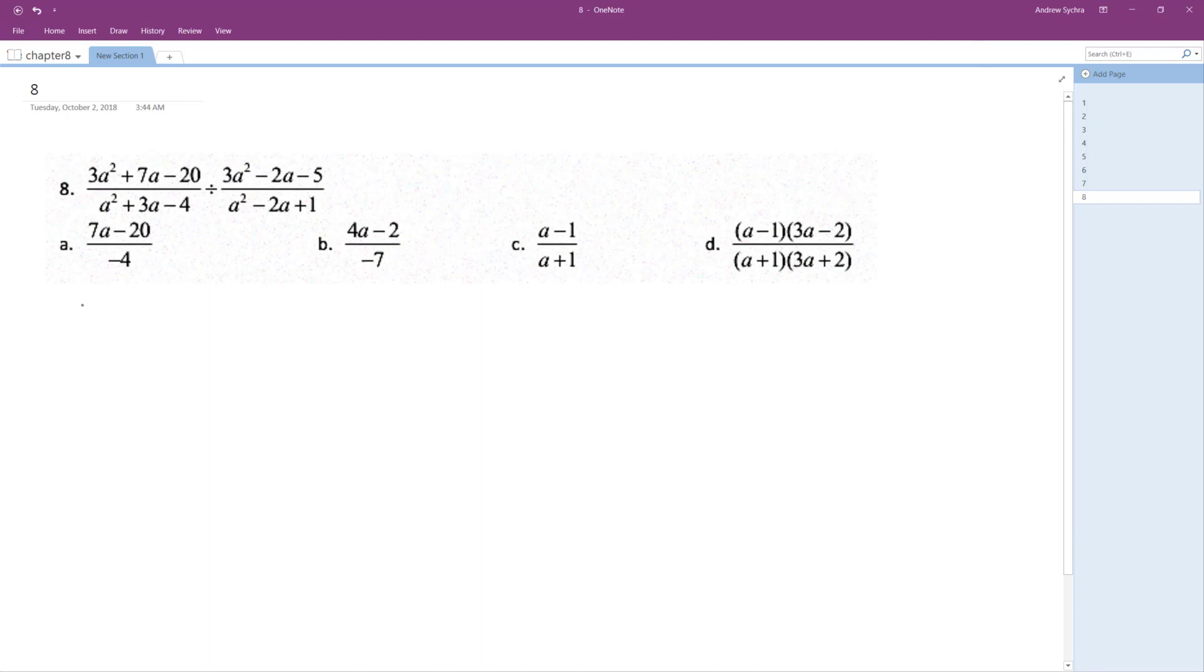Starting off here on the left, I'm going to factor this out first so we can get simpler terms. So 3a minus 5 and then a plus 4.